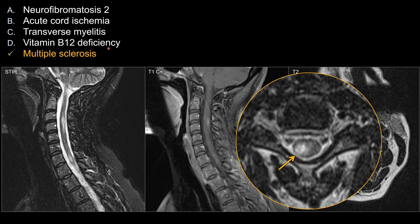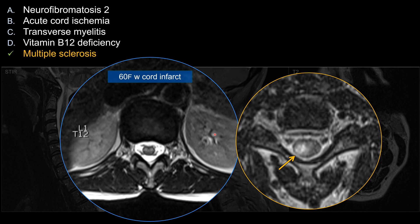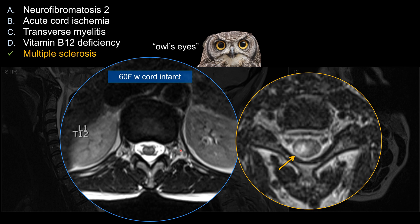For acute cord ischemia, our patient has a lesion involving the periphery of the spinal cord. For acute infarction, because the gray matter tends to reside within the central part of the spinal cord, the part that tends to be affected is the gray matter. The central portion usually produces a rounded appearance dubbed the 'owl's eye sign.' So this does not look like the classic picture for acute cord ischemia, especially considering infarction caused by anterior spinal artery infarction, which involves the central cord.